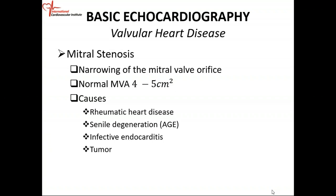The mitral valve is located between the left atrium and the left ventricle. In diastole, it allows blood to flow from the left atrium into the left ventricle. The normal mitral valve area is about four to five centimeters squared — it's a little bit bigger than the aortic valve.